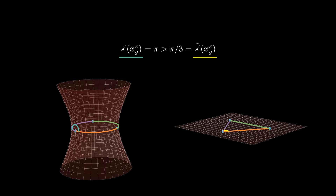I would like to point out the importance of sigma being simply connected in the first statement. If we take the standard one-sheeted hyperboloid and x, y, z at the same distance in the middle circle, the angles of the triangle are all 180 degrees, or pi, but when we look at the comparison triangle, it is equilateral and all comparison angles equal 60 degrees, or pi over 3. So the conclusion of the theorem doesn't hold if we don't assume the surface is simply connected.